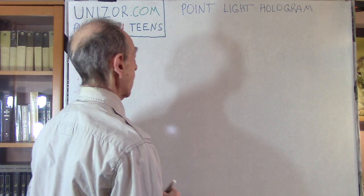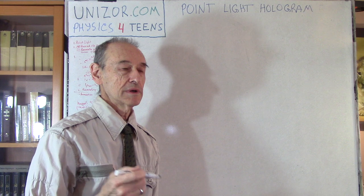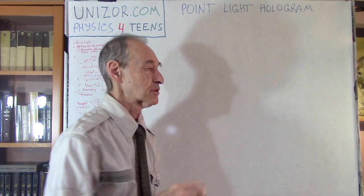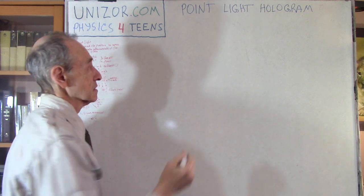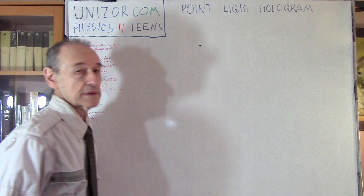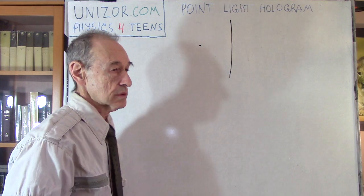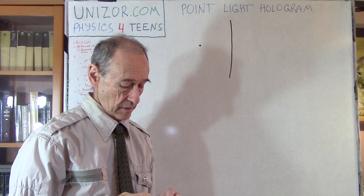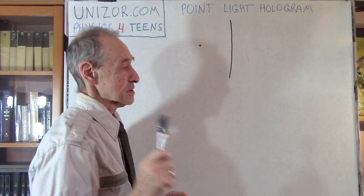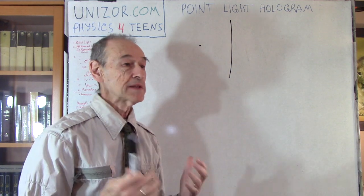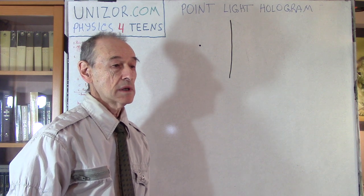So this is our object — we would like to record its image and then recreate it in some other place using the media on which it was recorded. I'm now describing something which a famous physicist came up with as an idea for how to record and then recreate the image of a point light. I forgot his name — in the textual part of this lecture I do put his name; it's a Hungarian name, Gabor, I think.